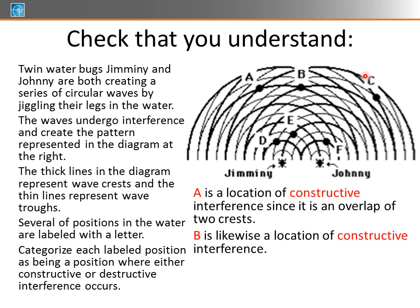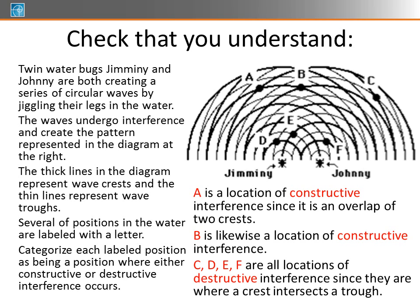C, however, has a crest and a trough. So that should be destructive interference. And if we look at D, we have a crest from Jiminy and a trough from Johnny. E has a trough from Jiminy and a crest from Johnny. And F has a crest and a trough. So C, D, E, and F all should be destructive interference.